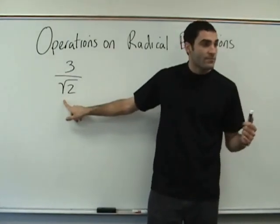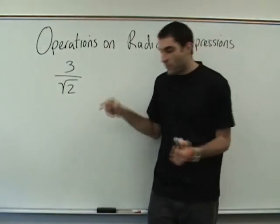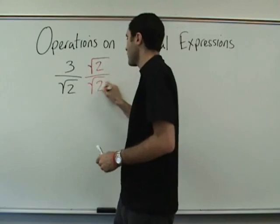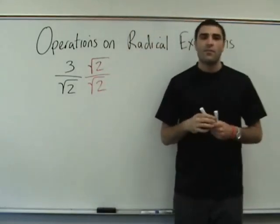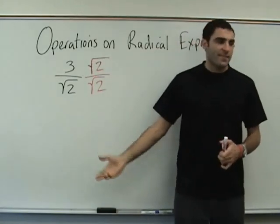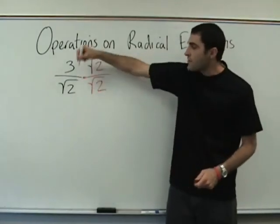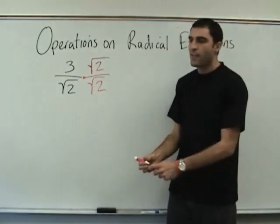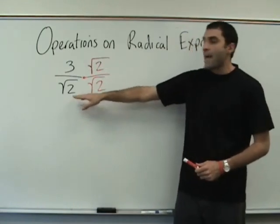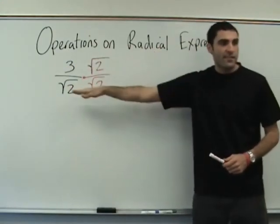Any guesses about what that would be? Two? So we should multiply top and bottom by two? By square root of two? Let's jump into it. Here's square root of two over square root of two. What is square root of two divided by square root of two, essentially? One. It's the number one, so we're not really changing this number. If you multiply by one, you're not changing anything. So that's okay — we just want to alter it so that it looks a little different. How do we multiply fractions? Across — the numerators and the denominators.